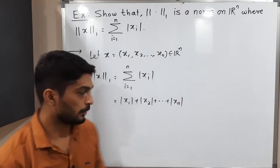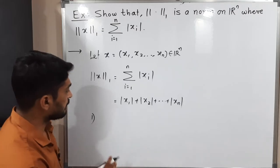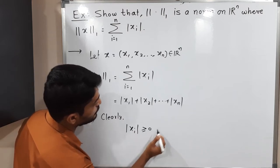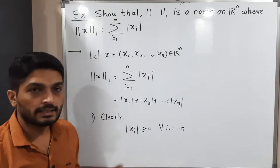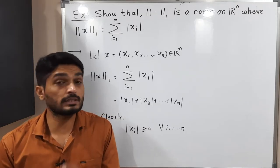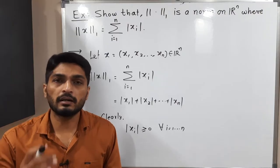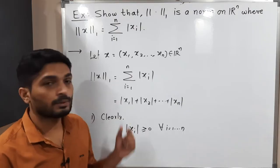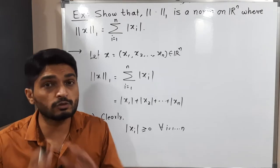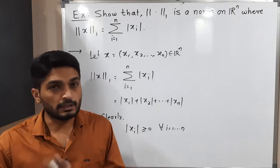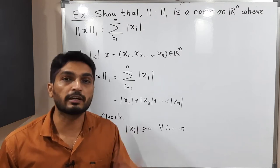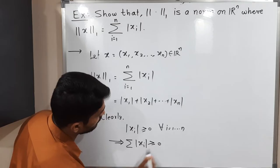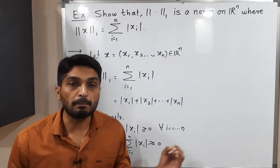Let us discuss the first condition. Clearly, |xᵢ| ≥ 0 for all i from 1 to n, because x₁, x₂, ..., xₙ are components of x and are real numbers. The modulus of any real number is non-negative, so |x₁| ≥ 0, |x₂| ≥ 0, and so on up to |xₙ| ≥ 0. Since each term is non-negative, their summation is also non-negative: ∑|xᵢ| ≥ 0.